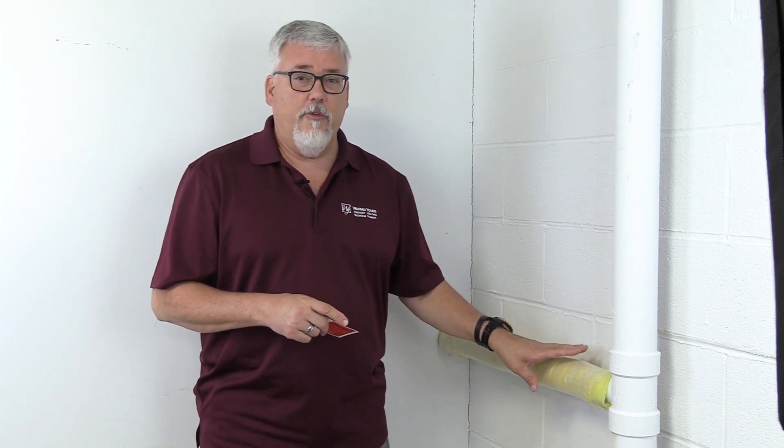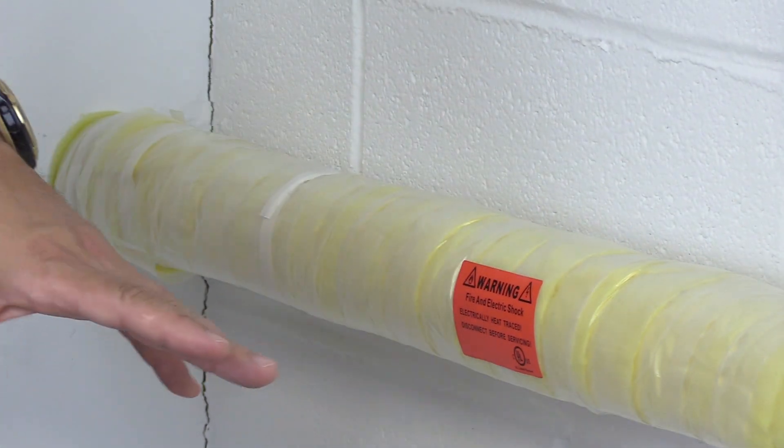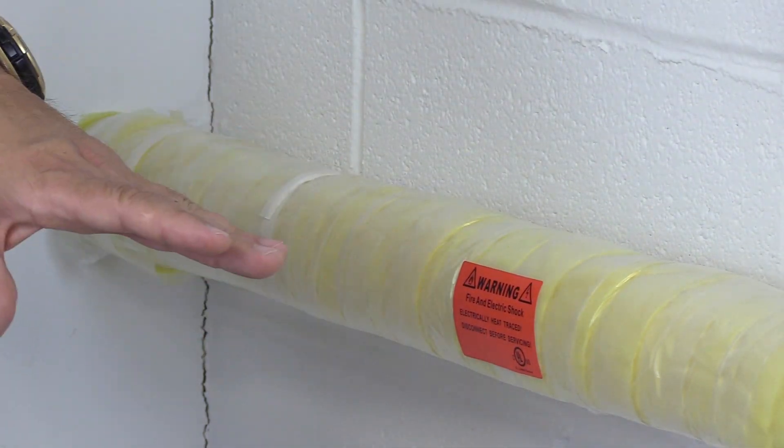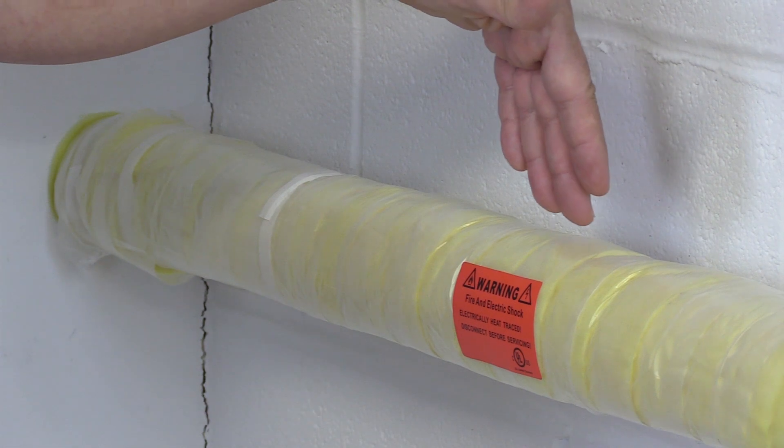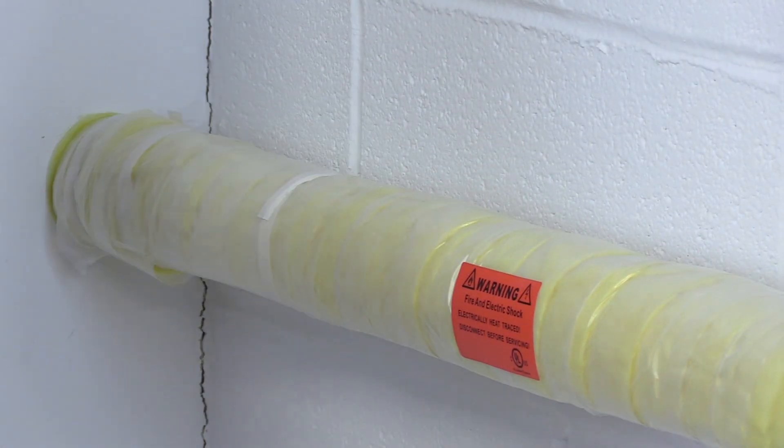Okay, now that we have installed the insulation and the waterproofing over the pipe, it's time to install the warning labels. Warning labels should be placed every 10 feet on the pipe. When you place the label on the pipe, you want to make sure that it's visible from where people will be working on it. So you don't want to put it on the top where no one will ever see it. You want to put it in a visible location where people will be able to see it.